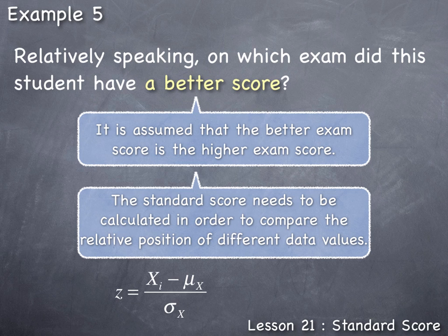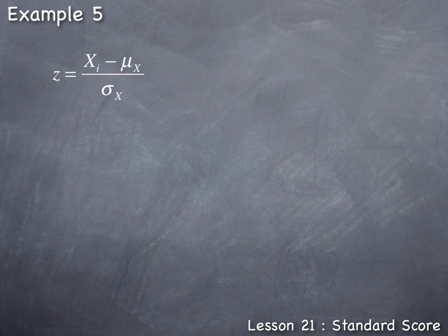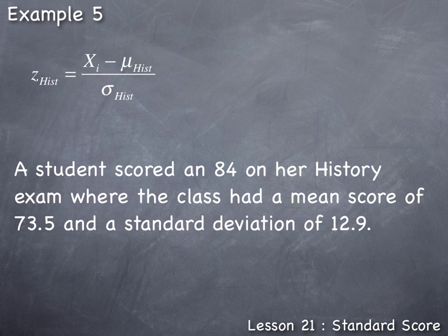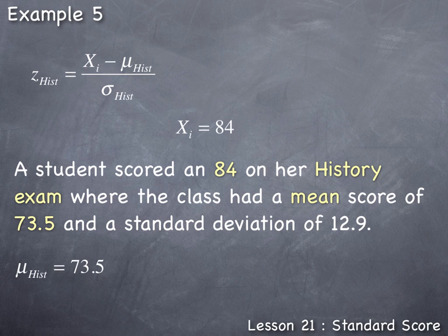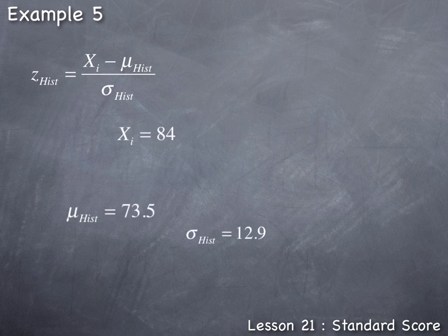First, we're going to calculate her standard score on her history exam. Since the student scored an 84 on her history exam, her data value x sub i in history is equal to 84. The entire class had a mean score of 73.5, so the population mean mu for the history exam equals 73.5. The entire class had a standard deviation of 12.9, so the population standard deviation sigma for the history class equals 12.9.